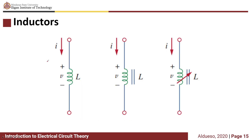Following the passive sign convention, if a current is allowed to pass through an inductor, it is found that the voltage across the inductor is directly proportional to the time rate of change of the current. So the voltage is directly proportional to the rate of change of the current.